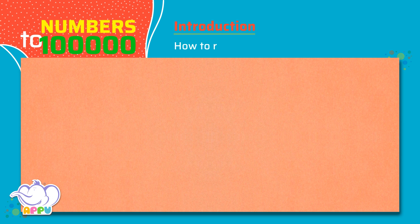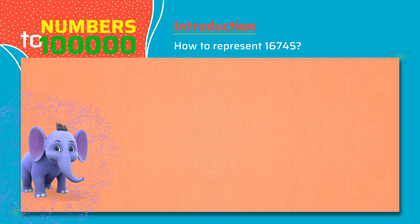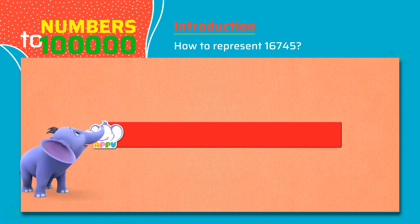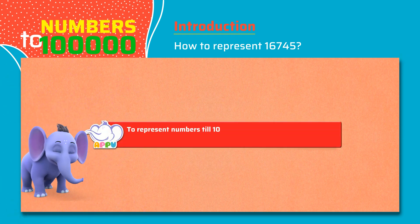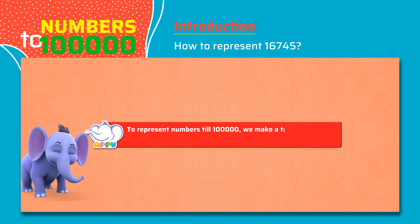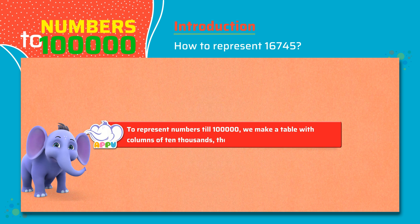How to represent 16,745. To represent numbers till hundred thousand or one lakh, we make a table with columns of ten thousands, thousands, hundreds, tens, and ones.